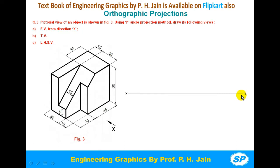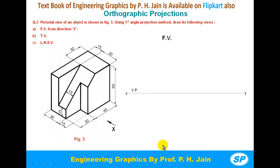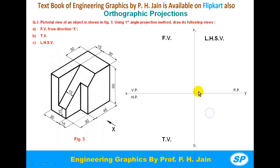First, we draw the XY line to indicate the reference line. Above this XY line is the vertical plane (VP) and below it is the horizontal plane (HP). We mark VP here to draw the front view and HP below the XY line to draw the top view. Then we draw the X1Y1 line to create the profile plane (PP).